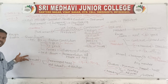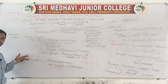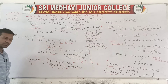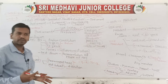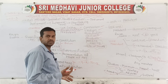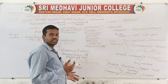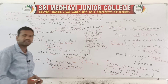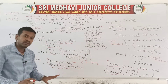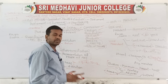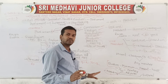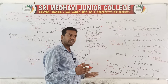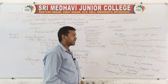Rajya Sabha is a permanent house and will not be dissolved. One-third of the members will be retired for every two years, so 33% of members retire every 2 years, but all members will not retire at the same time.